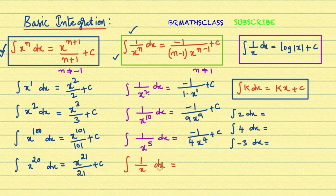Important: integral of 1 by x dx. Here x power 1 is there, so when n equals 1, we use the third formula. Integral of 1 by x dx is log mod x plus c. This is because the derivative of log x is 1 by x. So when applying the second formula, if n equals 1, we use this formula instead.